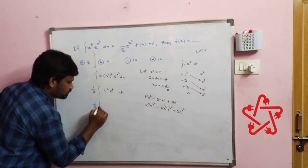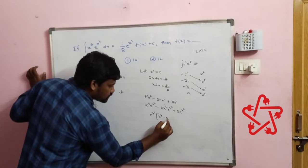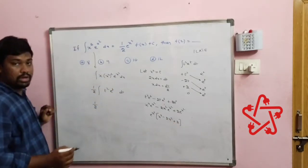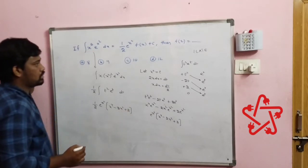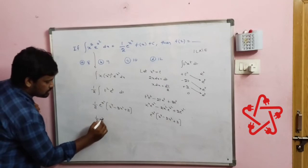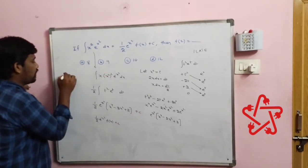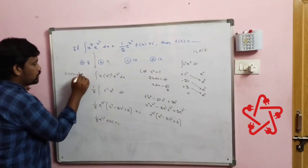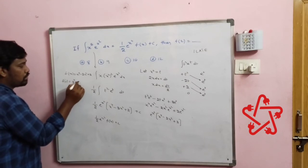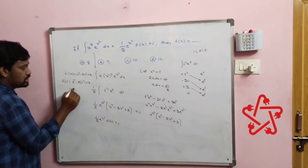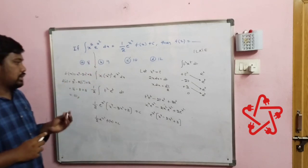Taking eˣ² as common, we get eˣ² · (x⁴ − 2x² + 2). Comparing with the given form (1/2)·eˣ²·f(x) + c, we identify f(x) = x⁴ − 2x² + 2. Therefore f(2) = 16 − 8 + 2 = 10. This is the correct answer and the method for solving this kind of problem.